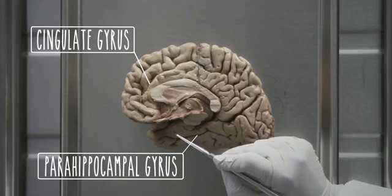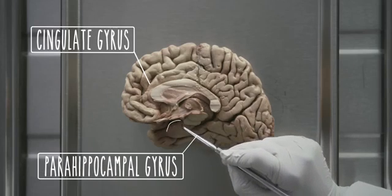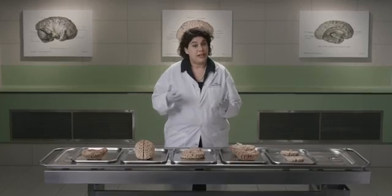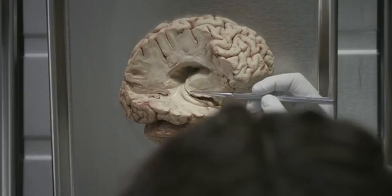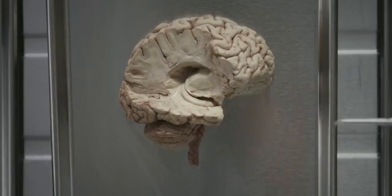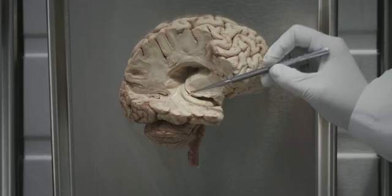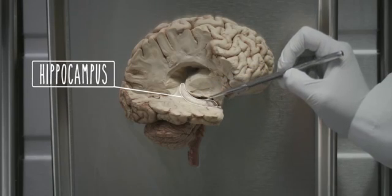This anterior swelling of the parahippocampal gyrus is the uncus. We are now going to look at the deep structures of the limbic system: the hippocampus and the amygdala. The hippocampus is primarily involved in memory, and the amygdala is primarily responsible for emotional processing. In this specimen, we have opened the lateral ventricle to show you the hippocampus as it lies in the floor of the inferior horn. This bulge here is the hippocampus.